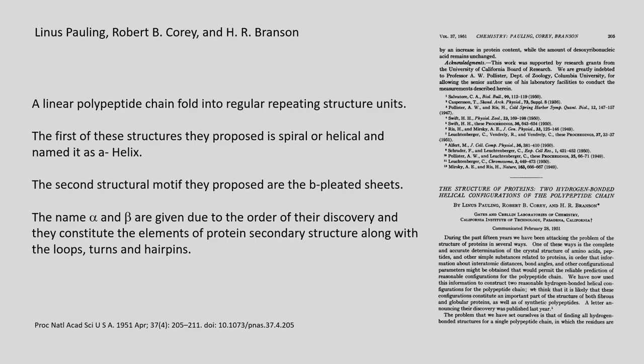This is a landmark paper by Linus Pauling, Robert Corey and Branson, where they described important elements of protein structures. They concluded that linear polypeptide chains fall into regular repeating structure units, naming them alpha helix — a spiral arrangement of amino acids in 3D space — and beta pleated sheets. The names alpha and beta reflect the order of their discovery, and they constitute secondary structure elements along with loops, turns and hairpins.